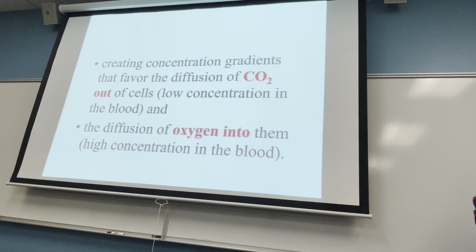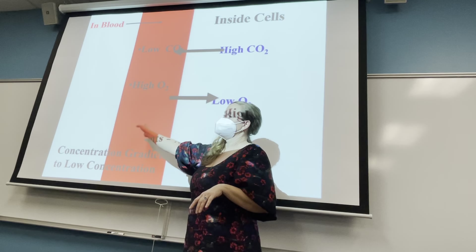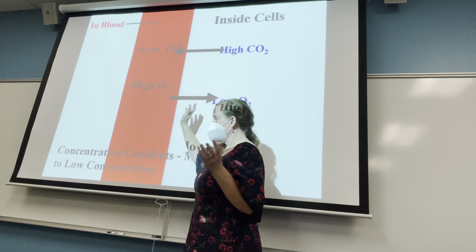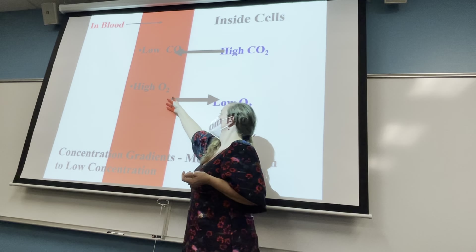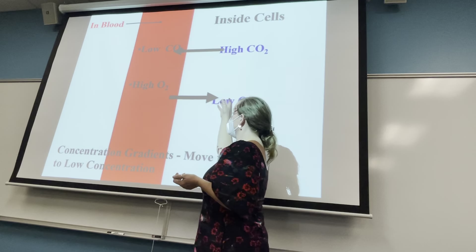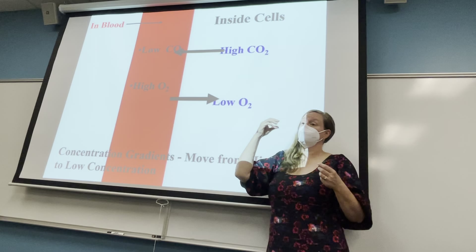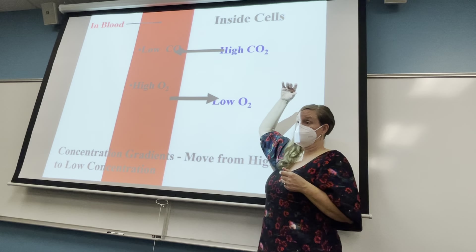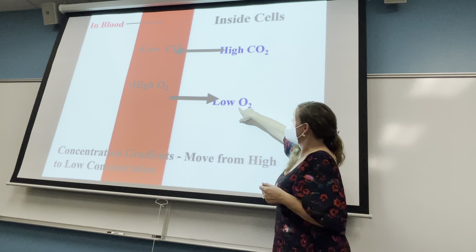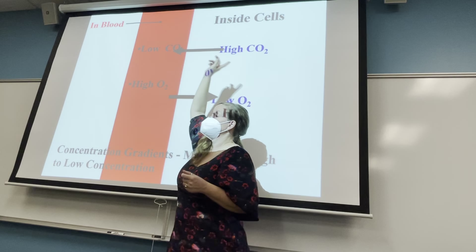A concentration gradient is set up to make this a very efficient process. Oxygen is very high in the blood vessels around the alveoli after you breathe in, and it travels through the blood from high concentration to low concentration in your cells. As soon as oxygen enters, it gets used up by cellular respiration. Carbon dioxide, as a product of cellular respiration, becomes very high in the cells and low in the blood, so it diffuses out.